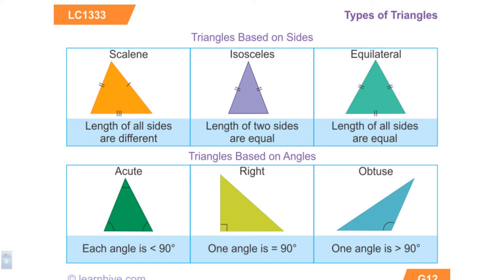Looking at the top, triangles classified by the number of sides: a scalene triangle is where none of the sides are the same. Isosceles is where two sides are the same. When all three sides are the same it's equilateral. So: none the same is scalene, two the same is isosceles, and all three the same is equilateral. Technically an equilateral triangle is also isosceles.